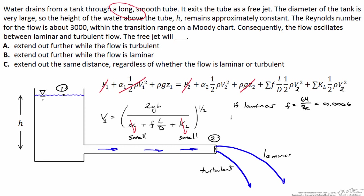If the flow is turbulent, you could look up on a Moody chart for a smooth tube or a smooth pipe. You'll find the friction factor is about equal to 0.04 if the flow is turbulent.